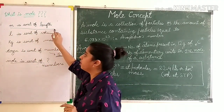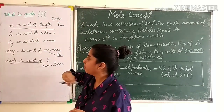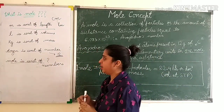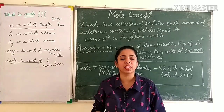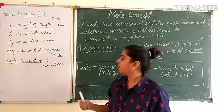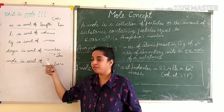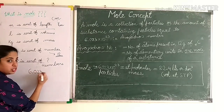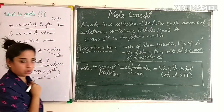Just as centimeter and kilometer are both units of length — centimeter for small lengths and kilometer for very large lengths — similarly, dozen measures a small number (12). But when we're talking about subatomic particles like atoms, molecules, protons, or neutrons, we can't count just 12, because there are millions. So mole is a unit for big numbers. In chemistry, one mole equals 6.023 × 10²³.